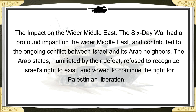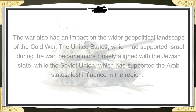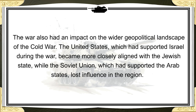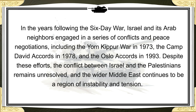The Six-Day War had a profound impact on the wider Middle East and contributed to the ongoing conflict between Israel and its Arab neighbors. The Arab states, humiliated by their defeat, refused to recognize Israel's right to exist and vowed to continue the fight for Palestinian liberation. The war also had an impact on the wider geopolitical landscape of the Cold War, with the United States becoming more closely aligned with Israel while the Soviet Union lost influence in the region. In the years following the Six-Day War, Israel and its Arab neighbors engaged in a series of conflicts and peace negotiations, including the Yom Kippur War in 1973, the Camp David Accords in 1978, and the Oslo Accords in 1993.